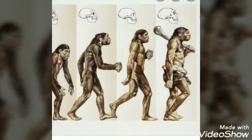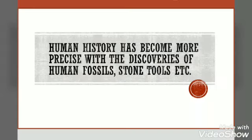Now I am going to read the next paragraph. Our understanding regarding early human history has become more precise with the discoveries of human fossils, bone, stone tools, cave paintings, etc. In the beginning, several scholars did not accept these fossils as the remains of early humans. In fact, over a period of time, the real importance of these discoveries was understood. Fossils are the remains or impressions of a prehistoric plant, animal, or human which have changed into stone. Generally, these fossils are embedded in rock and remain preserved for millions of years.